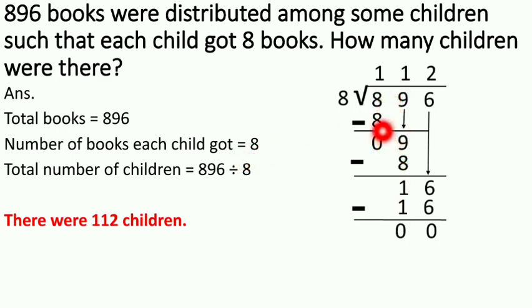So our final answer will be 112. So there were how many children? There were 112 children. Clear?